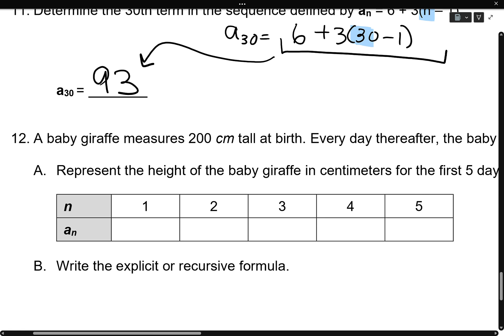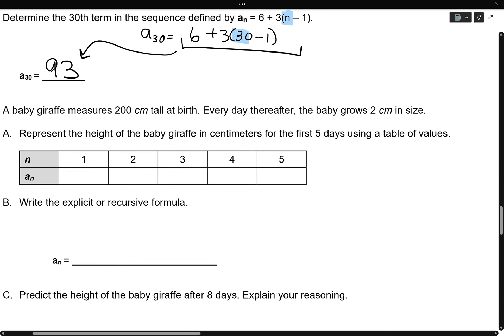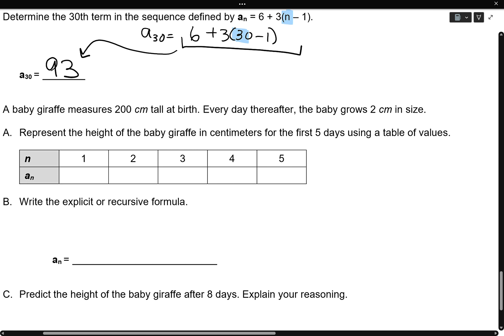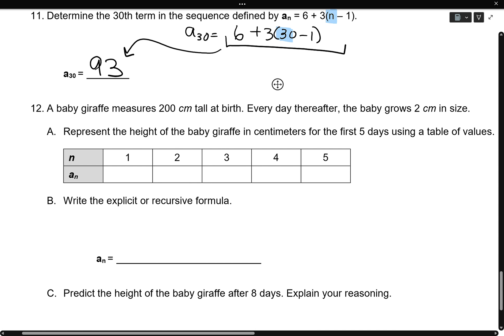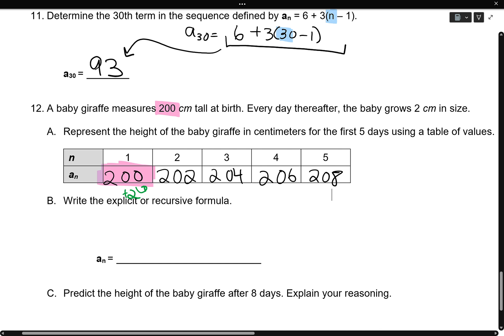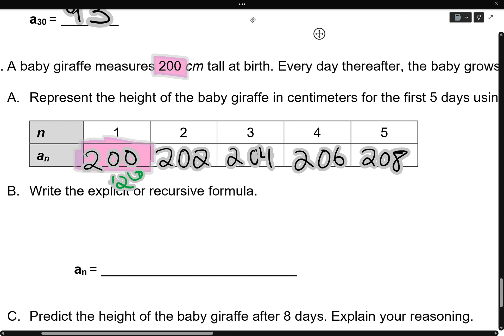Number twelve. A baby giraffe measures two hundred centimeters at birth. Every day thereafter, the baby grows two centimeters in size. Let's represent this as a table. Well, the baby giraffe starts off two hundred centimeters tall. So that's going to be in month one. In month two, he grows two more centimeters. Plus two. And then we continue adding two. And you know me, I've got to label everything. So we're going to put all those plus twos in there. I like to see it.